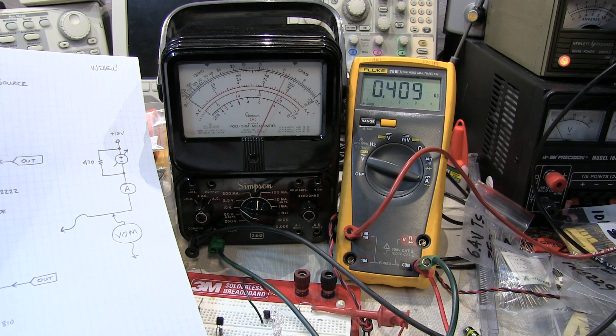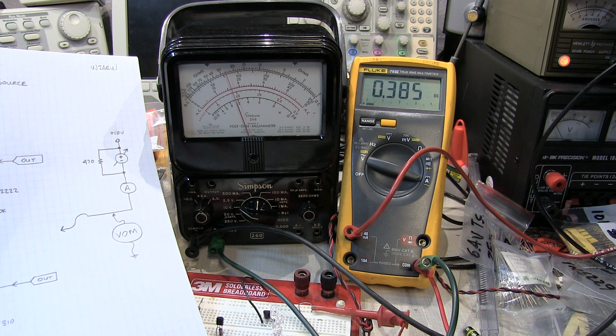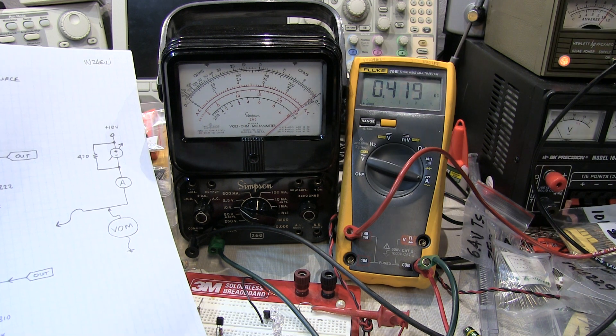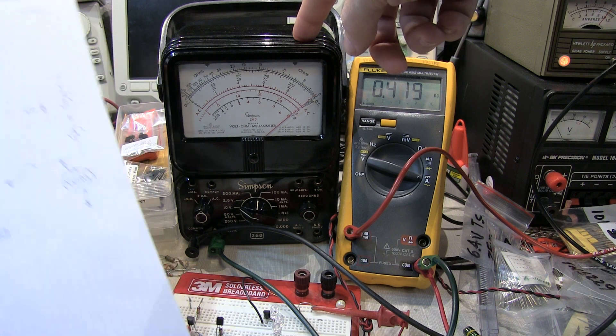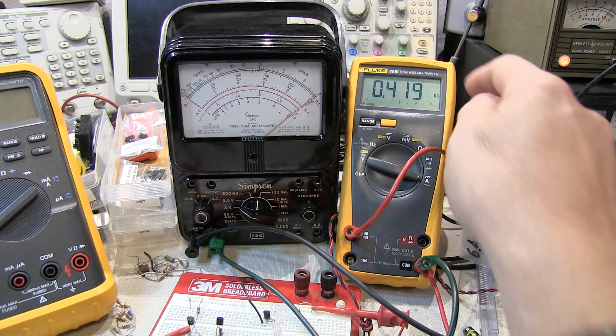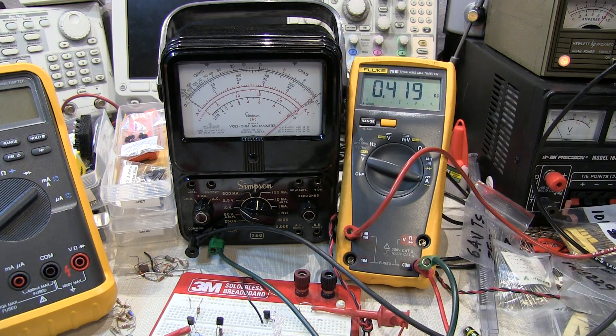But it turns out that that's being dominated by the input impedance of the Simpson 260. So let's replace the 260 with a DMM, and that's got a 10 megaohm input impedance. And then we'll see how much the current changes when we change that voltage.